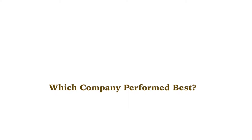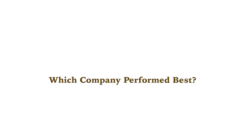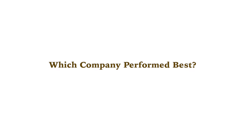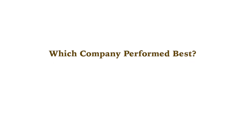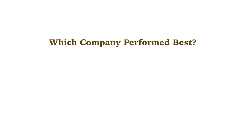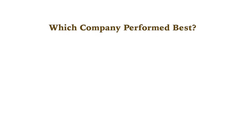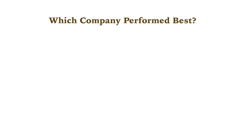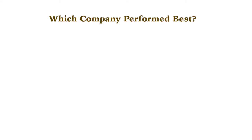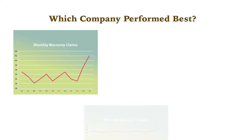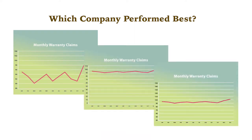Here's a simple example of how the design choices you make have ethical implications. Assume we're measuring a business parameter such as warranty claims. A company would typically have two goals: to minimize the overall level and to minimize the variance from month to month. Which of these three companies performed the best over the past year? It was a trick question — it's the same company and the exact same data in all three graphs.